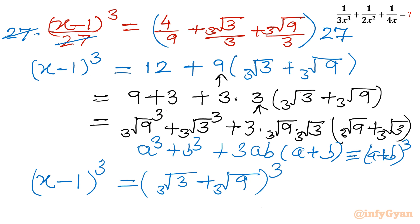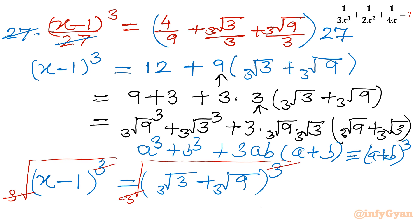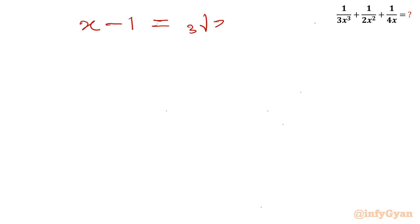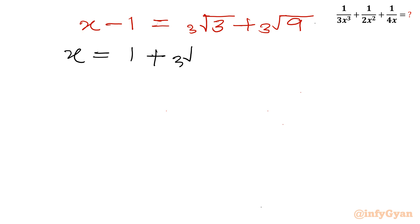Now I will take the cube root of both sides. Cube root and power 3 cancel on both sides. So we now have x minus 1 equals cube root 3 plus cube root 9. Adding 1 to both sides, x is equal to 1 plus cube root 3 plus cube root 9.